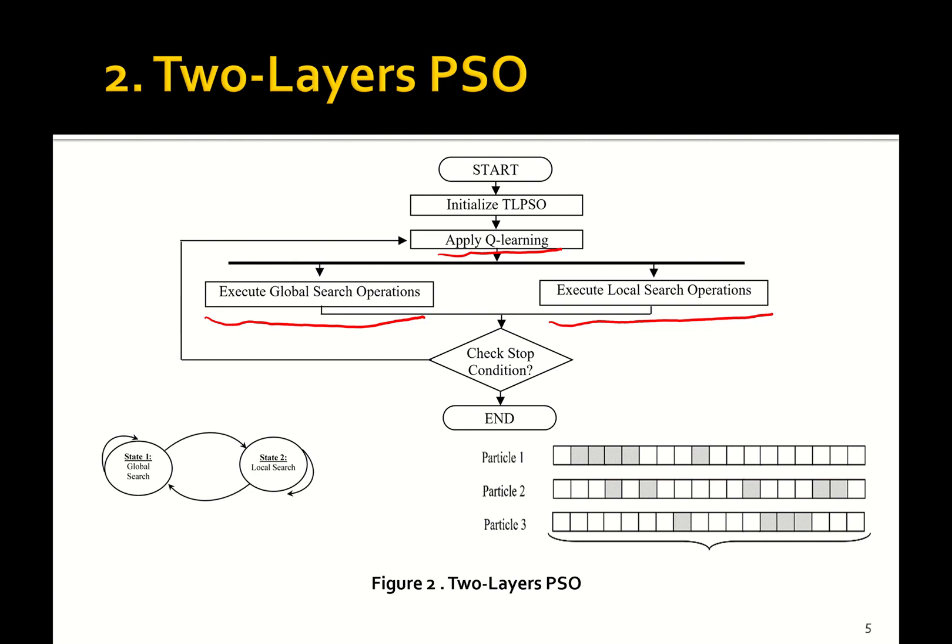The Q-learning algorithm will adaptively switch at runtime between global search and local search based on the performance of each layer. To implement the Q-learning, we use a finite state automaton with two states, switching between local and global search based on each layer's performance.